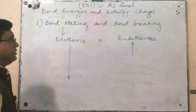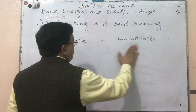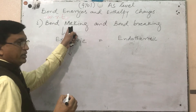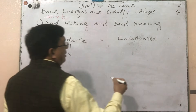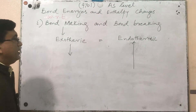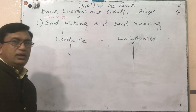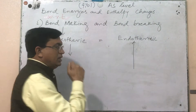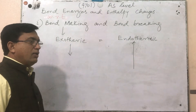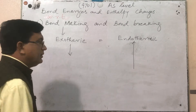On the other hand, if a small amount of energy is released during bond formation and a large amount of energy is absorbed while breaking the bond, then the overall process will become endothermic. Using bond making and bond breaking, we can easily identify whether a process is exothermic or endothermic.